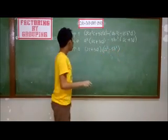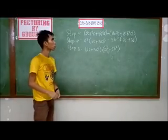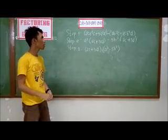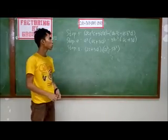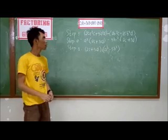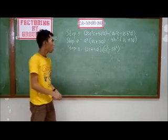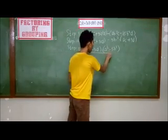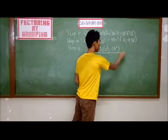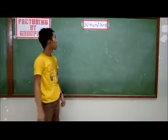Therefore, the factors of 2a squared c plus 3a squared d minus 10b squared c minus 15b squared d are 2c plus 3d and a squared minus 5b squared.